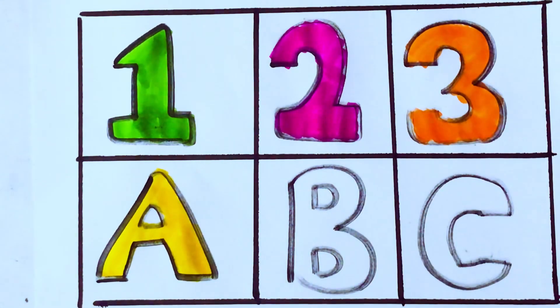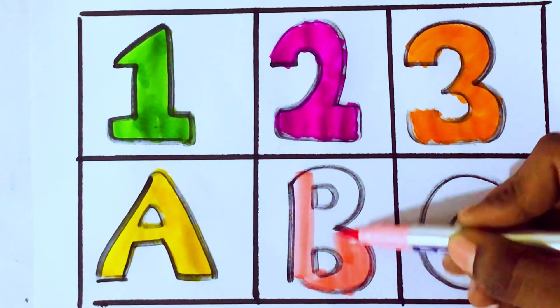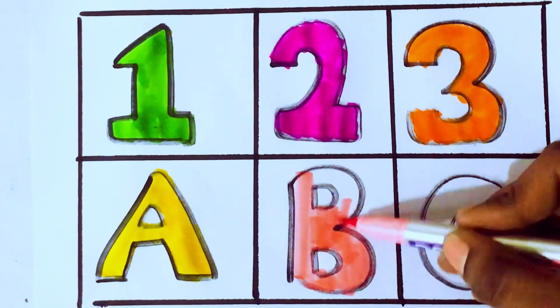Light pink color. A after B. Which letter kids? B. B for Ball. B, A, L, L, Ball.